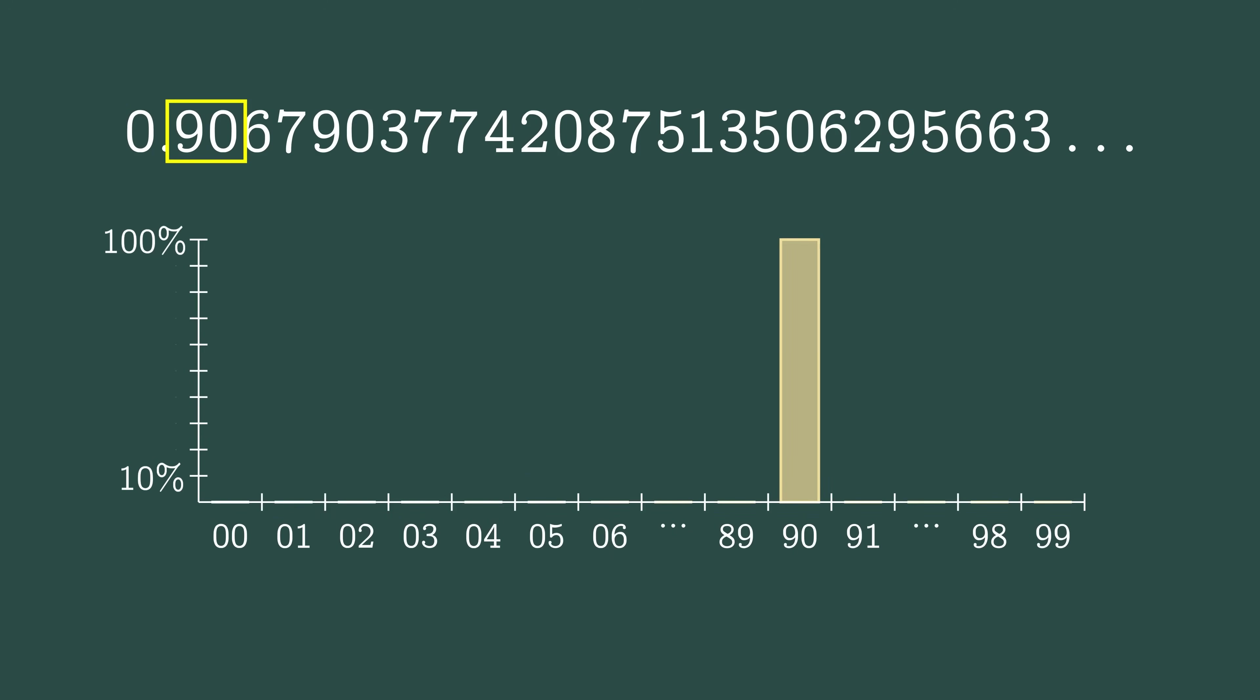Now, imagine the window displays two digits in a row. There are 100 possibilities. We can again tally these, the percentage of the time that each two-digit sequence has appeared. And in a normal number, they will all approach 1%.